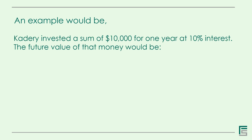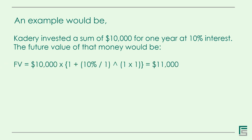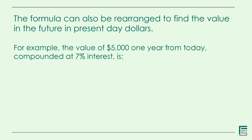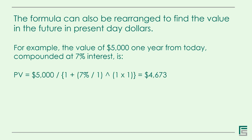An example would be: Kadiri invested a sum of $10,000 for 1 year at a 10% interest rate. The future value of that money would be $11,000. Smart move, Kadiri. The formula can also be rearranged to find a future value in present day dollars. For example, the value of $5,000 one year from today compounded at 7% interest is $4,673.